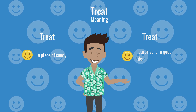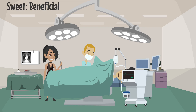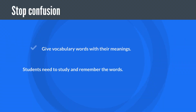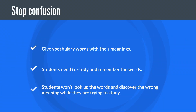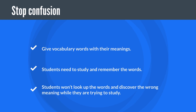In this case, a treat would be a surprise, and a sweet operation would be an operation that was very beneficial. Another way of stopping confusion is by giving vocabulary words with their meanings at the beginning of the week, so that students study and remember the words without looking up the wrong meaning.